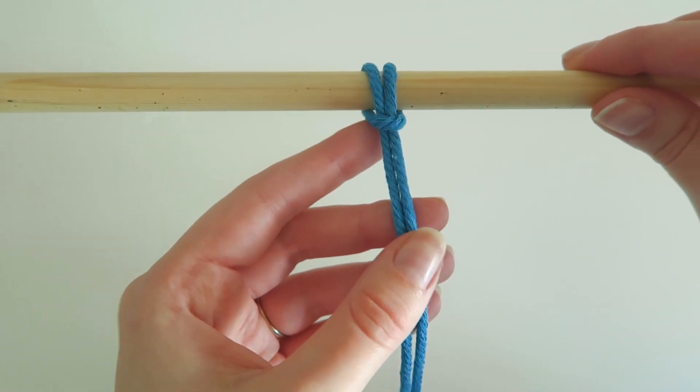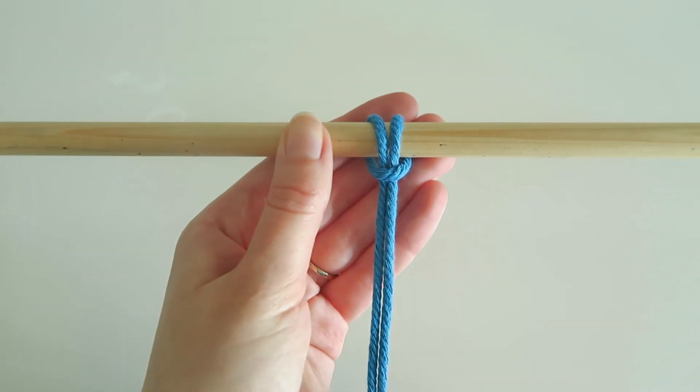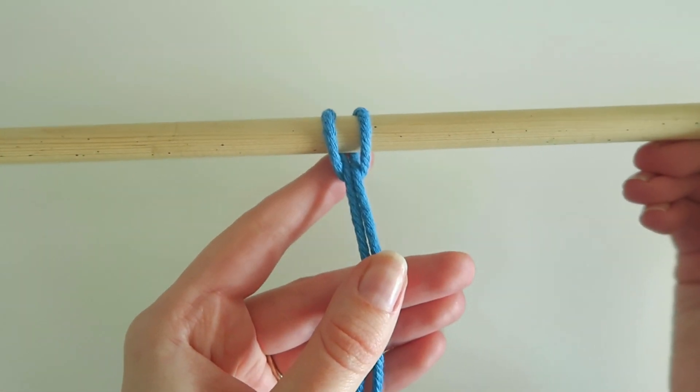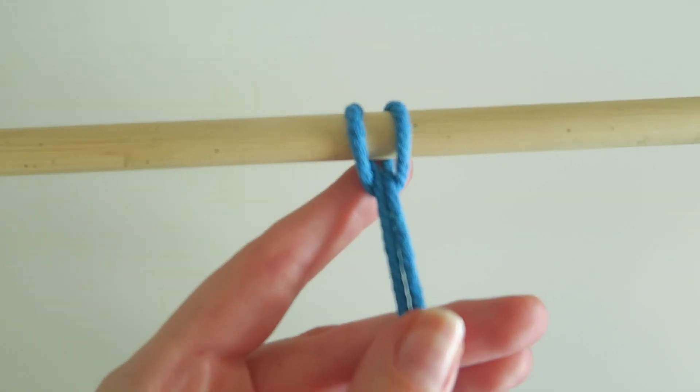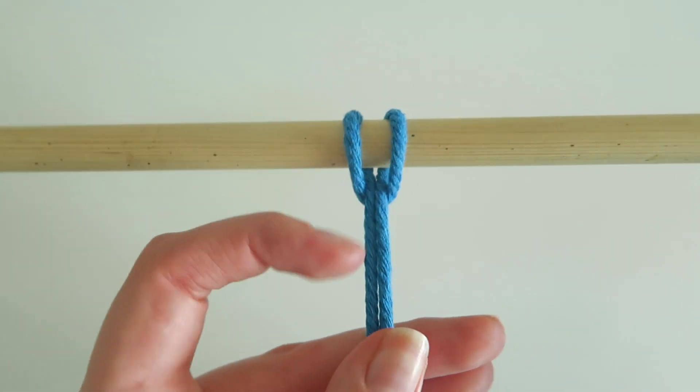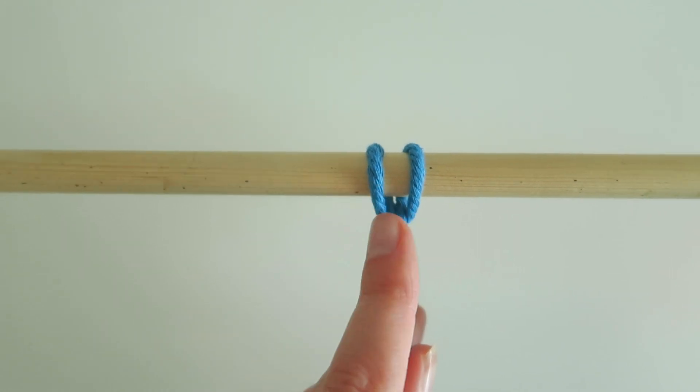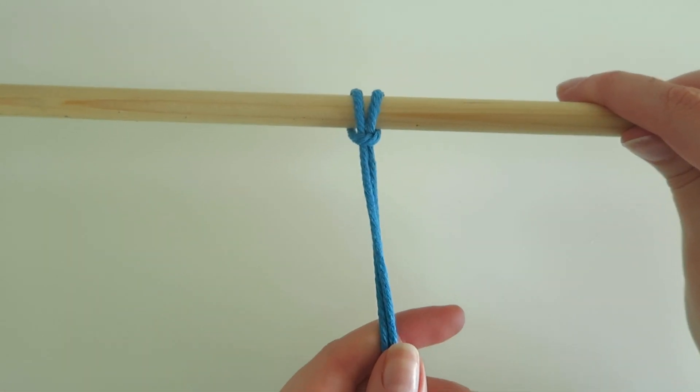So you should be able to see the difference between the Lark's Head knot, the front and the back of it. So I will flip that over and there is the back of your Lark's Head knot. It looks like it's got a little gap there so you can tell the difference between the back and the front.